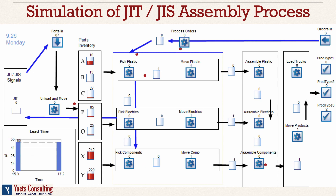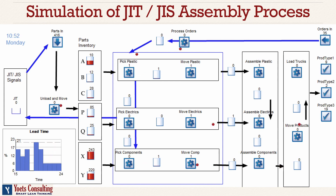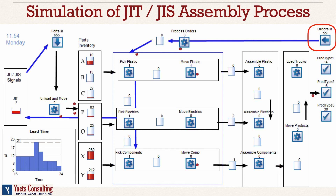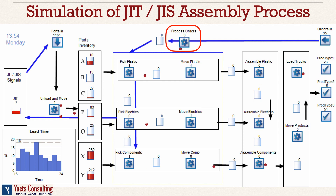You can see those red dots going all over from one place to the other, so the simulation has begun. The orders come in from here — you can see 45, 47, 50, 52, etc. Those orders coming in get processed, and that blue line is the information flow.